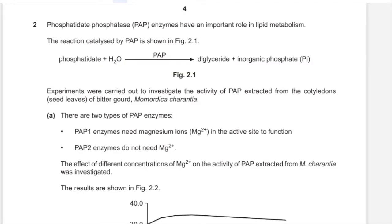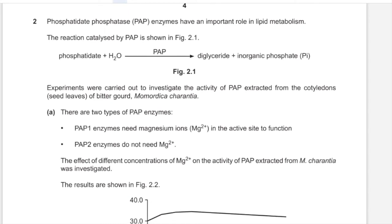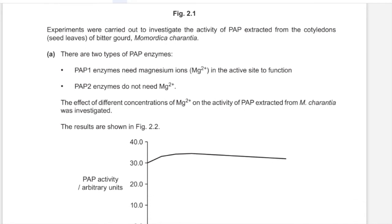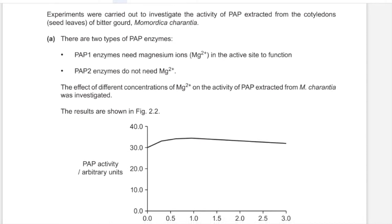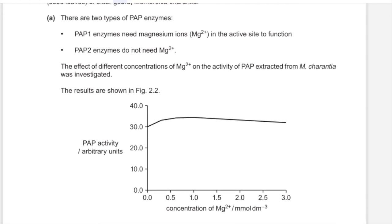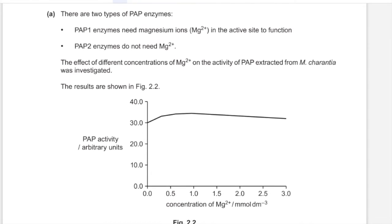Two phosphatidate phosphatase (PAP) enzymes have an important role in lipid metabolism. The reaction catalysed by PAP is shown in Figure 2.1: phosphatidate along with water is broken down to diglyceride and inorganic phosphate. PAP1 enzymes need magnesium ions in the active site to function, and PAP2 enzymes do not need magnesium ions.